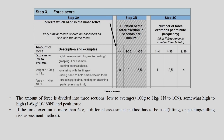Step 3 has sub-steps 3A, 3B, and 3C. Step 3A requires identifying the amount of force. There are two types described: light pressure with fingers — holding or grasping — for example, sorting letters or small objects, pressing with fingers, using hands to hold small electric tools, grasping, gripping, holding or attaching parts, pressing firmly. All such activities are considered.